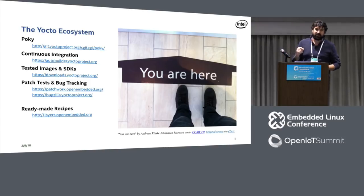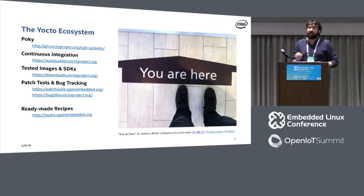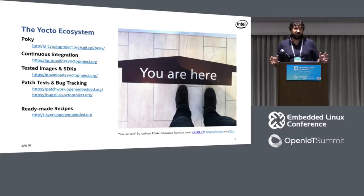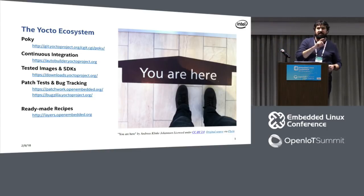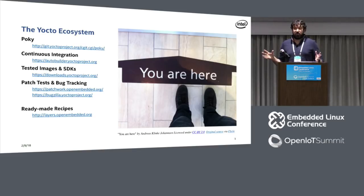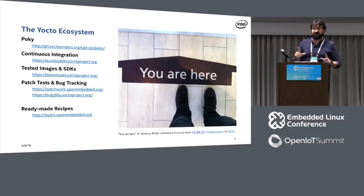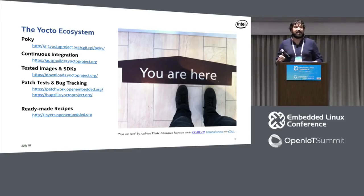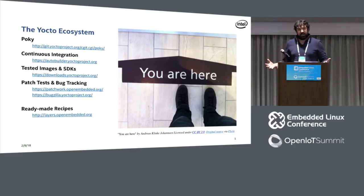Underneath the link to Poky is a link to our continuous integration — the auto builder. You don't need to know anything about the auto builder, but what you need to know is that on a daily basis we are testing four different architectures on something like six different distributions. These tests ensure that the versions of software we've picked for our release are going to be tested for compatibility and performance. By choosing to use Yocto in one of our releases, you get the benefit of all those tests. We also provide SDKs and images at downloads.yoctoproject.org, and we have a bug tracker.